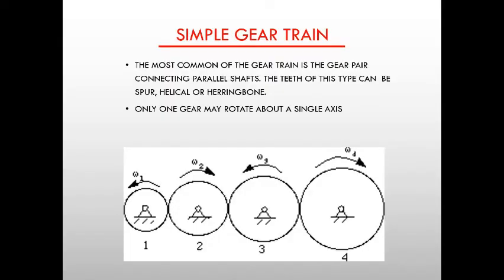Simple gear train. The most common gear train is the gear pair connecting parallel shafts. The teeth of this type can be spur, helical, or herringbone. Only one gear may rotate about a single axis. In the picture, we can see four gears of different sizes, but each gear has the same teeth module so they can mesh with each other. If the first gear rotates, it will rotate the second one; similarly, the second will rotate the third, and the third will rotate the fourth. The purpose of this is to transfer speed — we can either step up or step down.